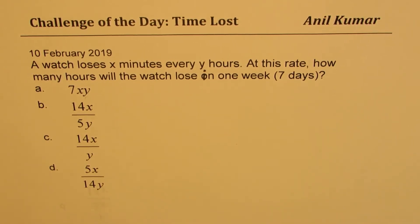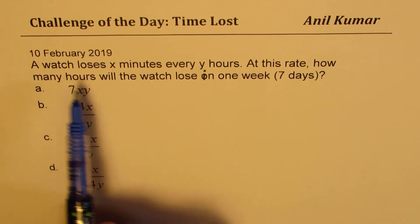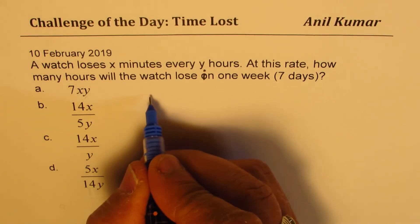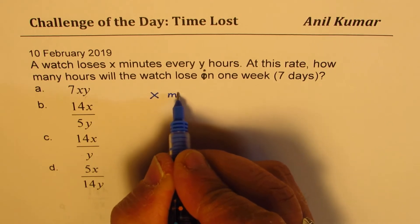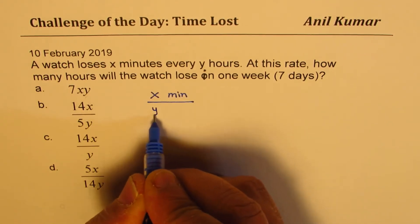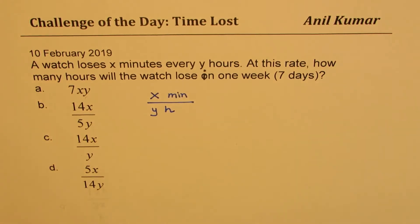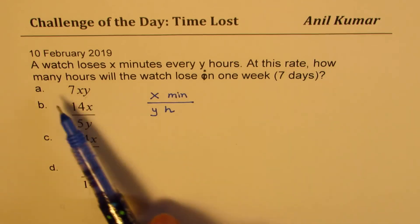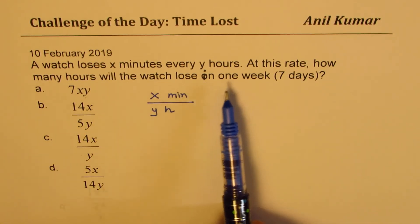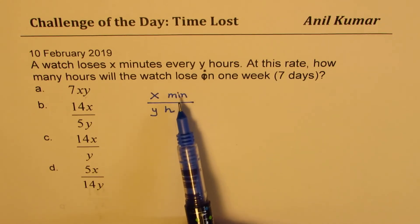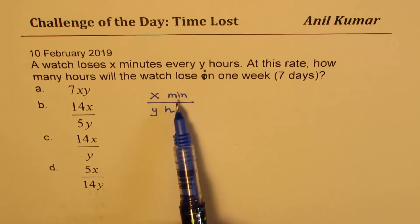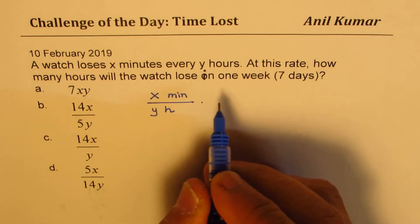My method of doing it is we could say the watch loses x minutes every y hours, so we are given x minutes in y hours. What do we need to find? At this rate, how many hours will the watch lose in one week? So we want hours lost in one week, so we should convert these minutes to hours lost. We know that in one hour we have 60 minutes, so in that way we have converted this lost time in hours.